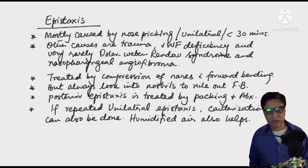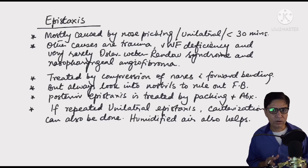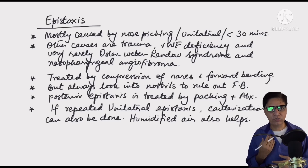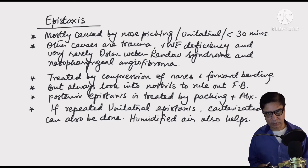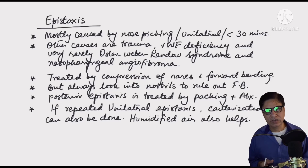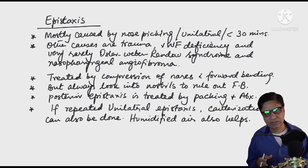Moving on to the final topic in pediatric ENT disorders: epistaxis — bleeding from the nose. Epistaxis can be anterior, where blood comes out through the anterior nostrils, or posterior, where it trickles back into the oropharynx and may lead to hematemesis. Most of the time it is caused by nose picking — digital trauma — which damages the delicate capillaries and nasal epithelium, leading to epistaxis.